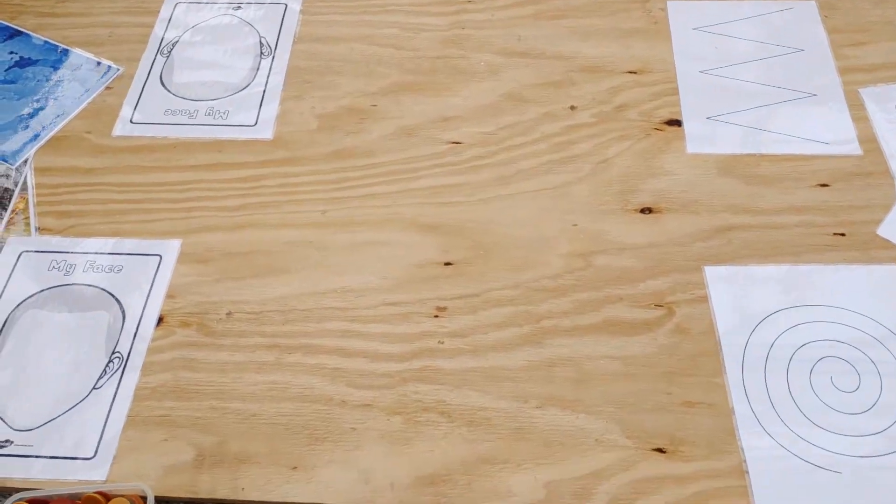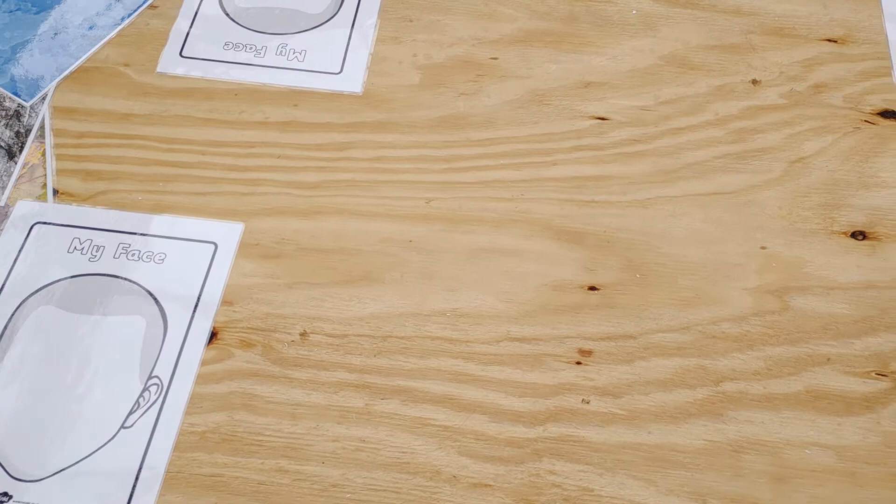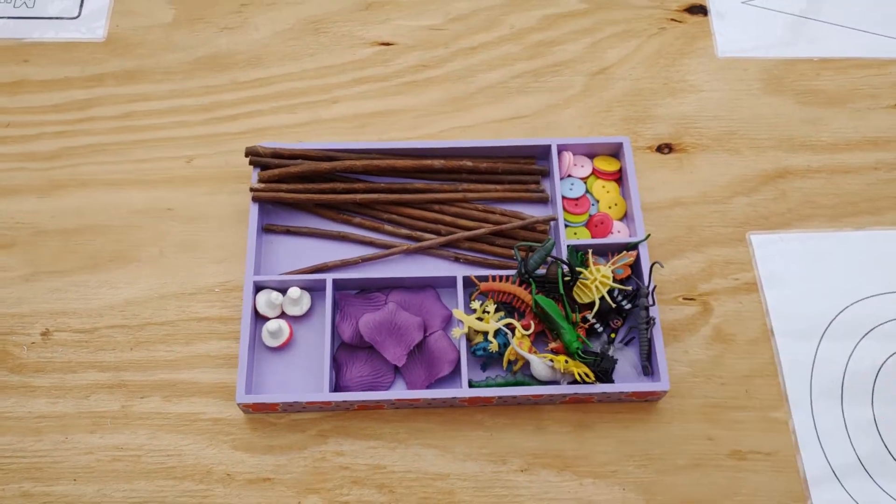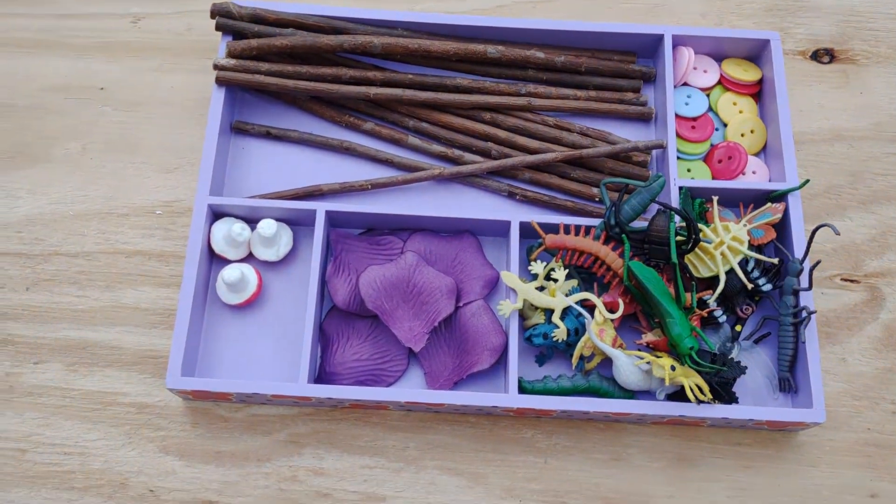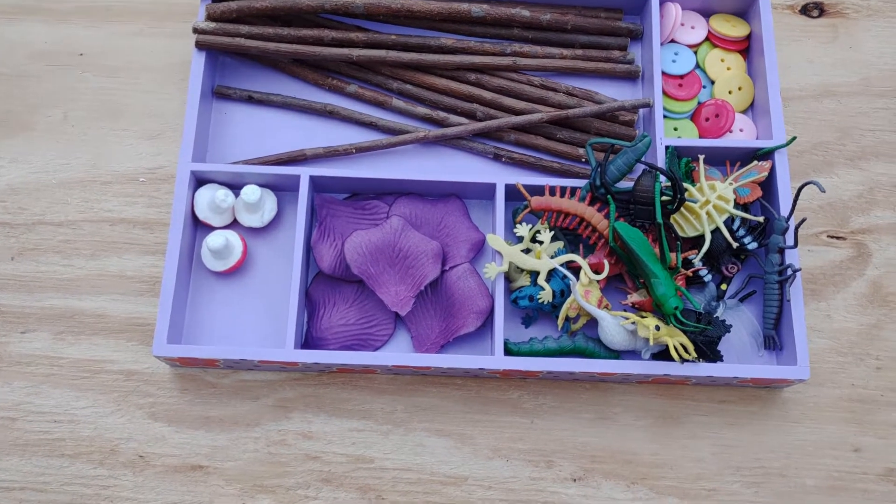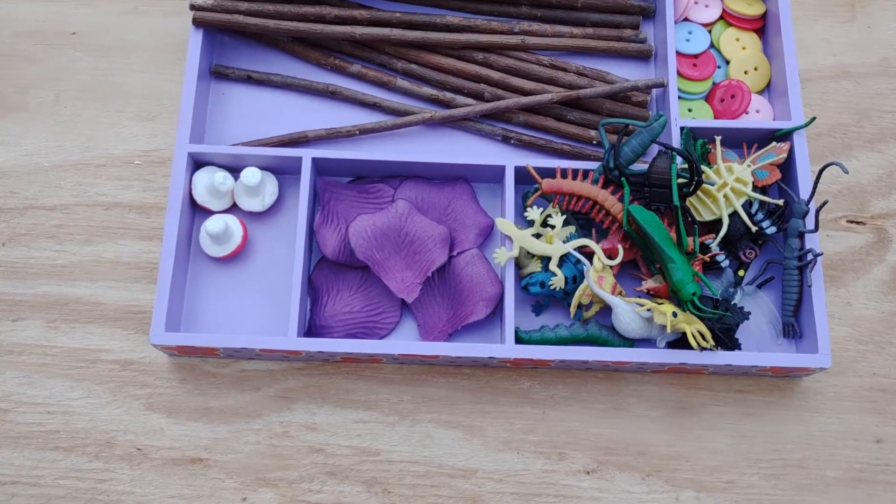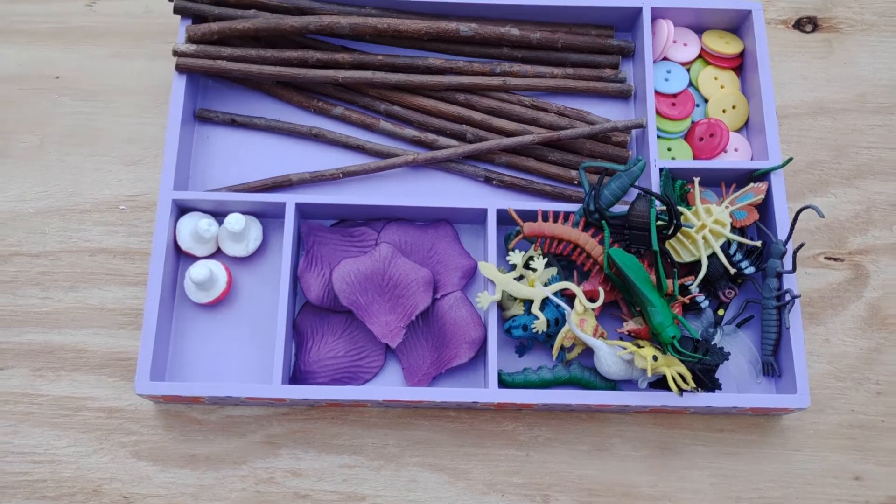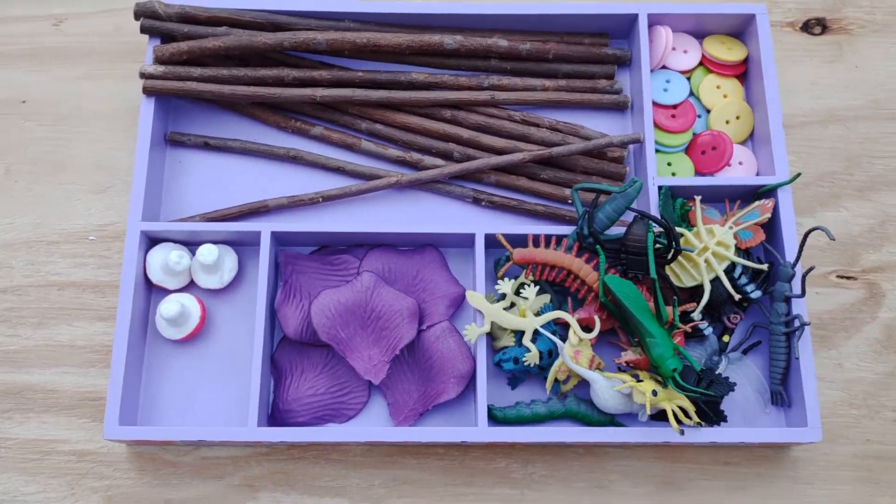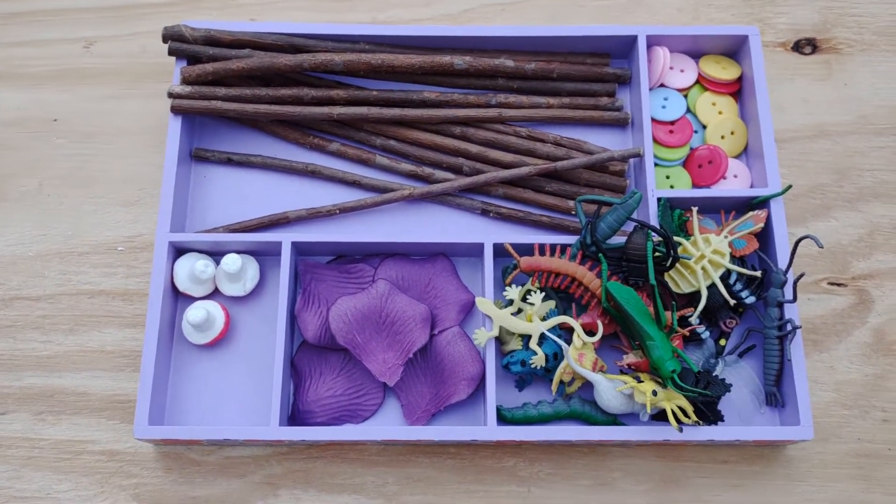So we're going to add some trays of things to go with these. Really you should use anything you've got around your house from buttons to dolly pegs, lollipop sticks, math counters, go on a nature ramble and find leaves, stones.